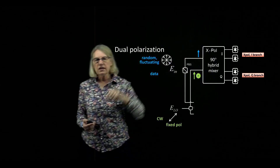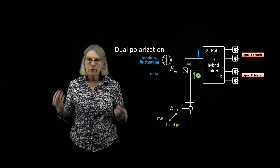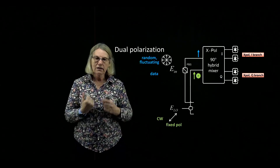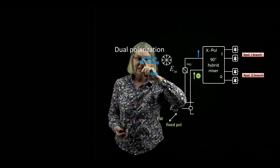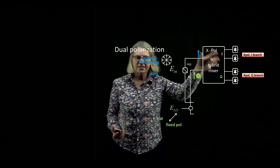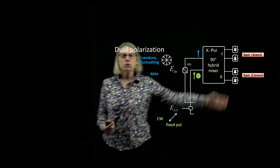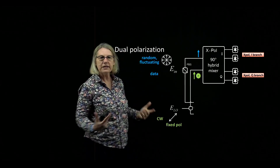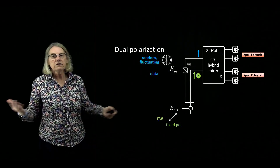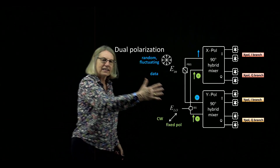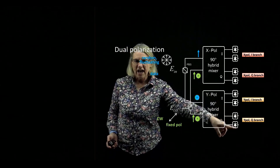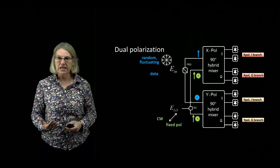On the X polarization path, the signal goes into the 90-degree hybrid mixer with one polarization state — contributions from perhaps both data tributaries, but on one polarization state at any given instant. The local oscillator has both polarization states as assumed when designing this 90-degree hybrid mixer. We add two balanced photodiodes to complete this section and get an I branch and Q branch on the X polarization. The same solution is tiled for Y polarization, yielding an I and Q branch on the Y polarization.